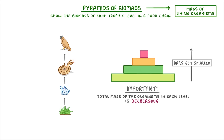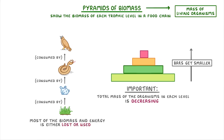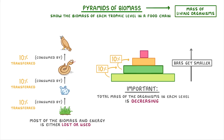The reason for this is that every time one organism is consumed by another and we move up a trophic level, most of the biomass and energy is either lost or used — only about 10% of it actually gets transferred up to the next level. So if we think about all the biomass of the grass, only about 10% of it will be passed on to the rabbits, and then only 10% of that rabbit biomass will be passed on to the snakes, and so on.